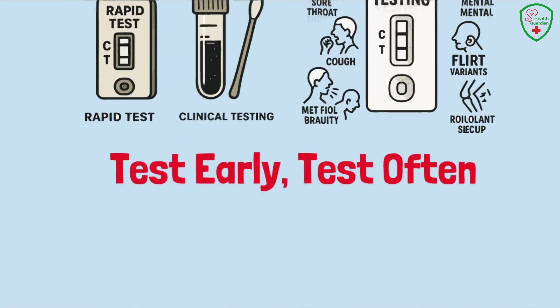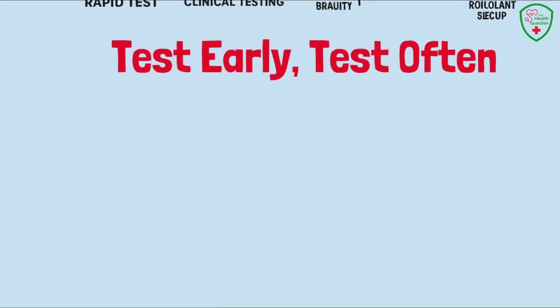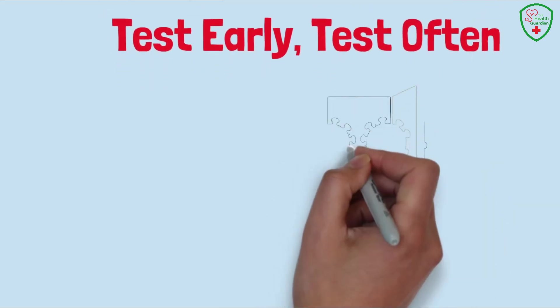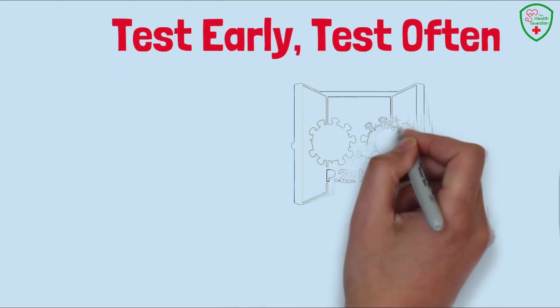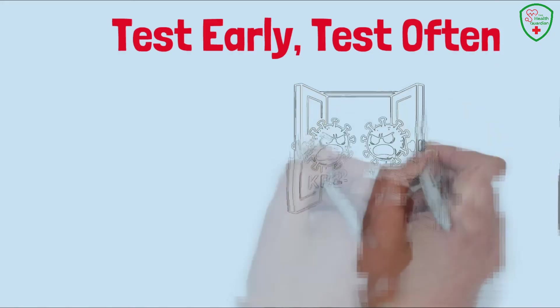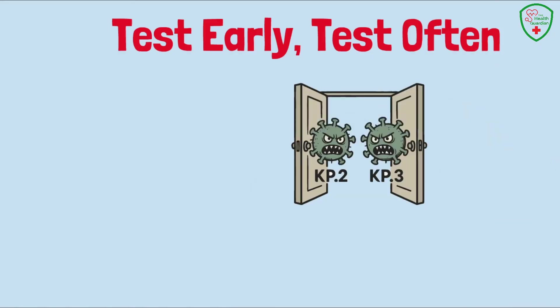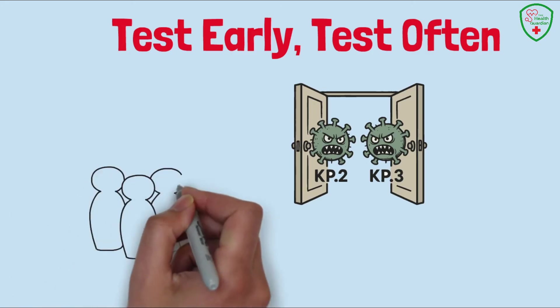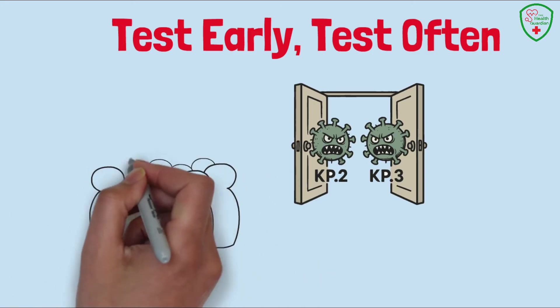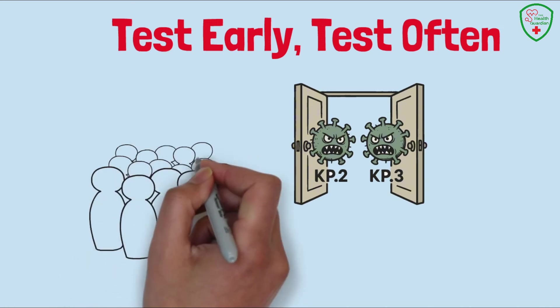Timing is everything. The sooner you test, the sooner you can stop the virus from spreading to your coworkers, friends, or grandma. Especially since FLIRT variants like KP.2 and KP.3 are more contagious. Plus, early detection means you can start treatment before things spiral out of control.